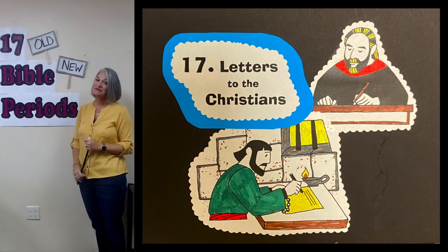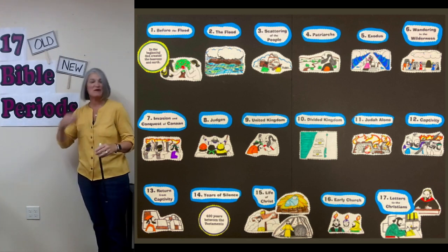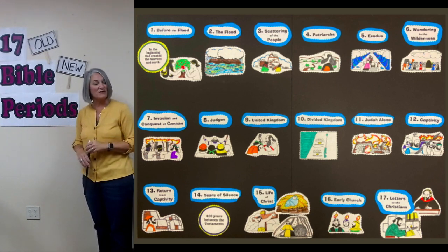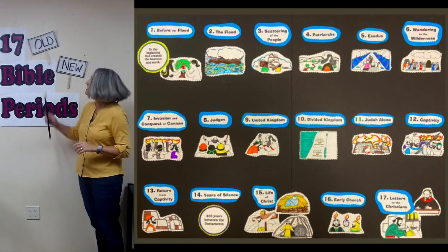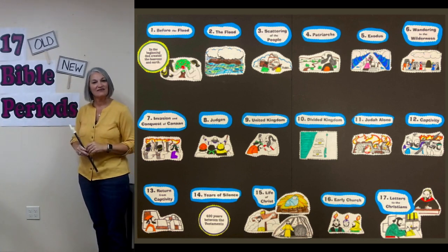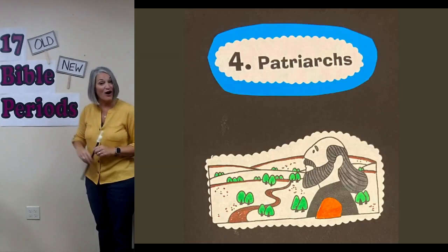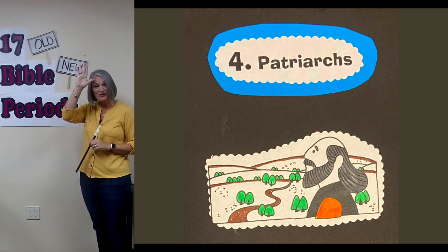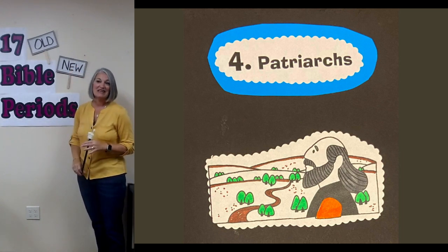Now here's another one — Joseph. Some of you remember Joseph. Remember his special coat? Remember who gave him the special coat? His father. That story is in the Old Testament, and Joseph fits in the patriarchs period. Remember our sign for patriarchs — he's one of them: Abraham, Isaac, Jacob, and Joseph.